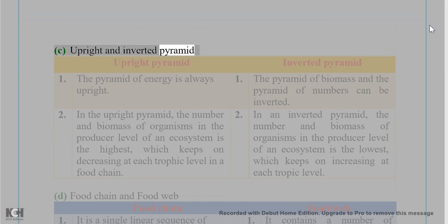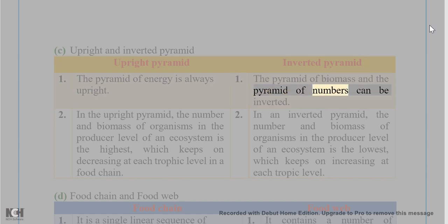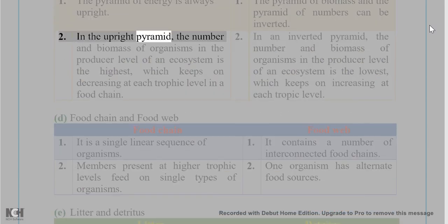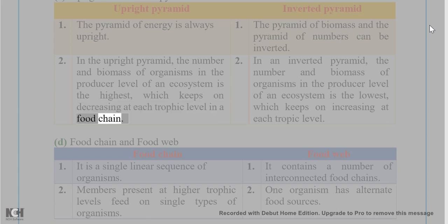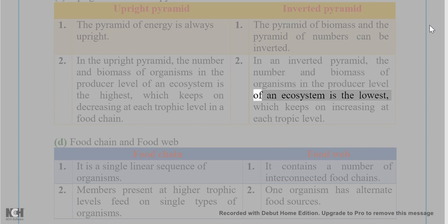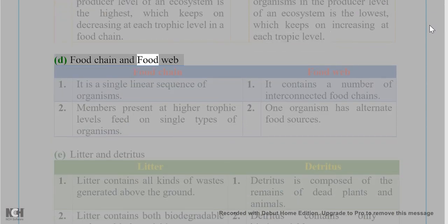Answer 6(C): Upright vs. Inverted Pyramid. The pyramid of energy is always upright. The pyramid of biomass and pyramid of numbers can be inverted. In an upright pyramid, the number and biomass of organisms at the producer level is the highest, decreasing at each trophic level. In an inverted pyramid, the number and biomass of organisms at the producer level is the lowest, increasing at each trophic level.